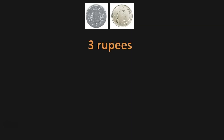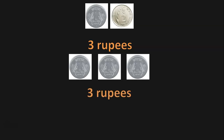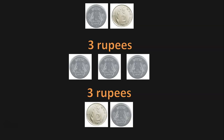Here, once again, we have a 1-Rupee coin and a 2-Rupee coin. Let us make 3-Rupees using these two coins. The different possibilities are: three 1-Rupee coins, which makes 3-Rupees; or a 2-Rupee coin with a 1-Rupee coin, which also makes 3-Rupees.